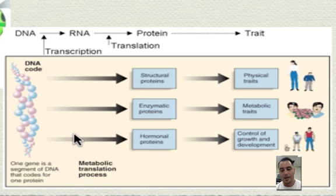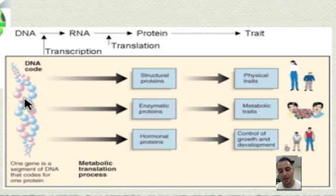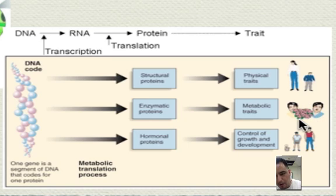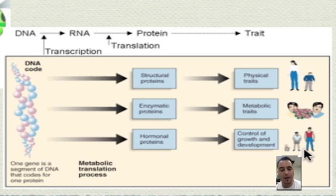Nucleic acids are the molecules that store genetic information, like DNA and RNA. Inside there's a code, and the code is to build proteins. These sections of DNA are called genes, and they're there to build different kinds of proteins to reveal our traits — our metabolic traits in terms of how fast we use energy — and to control our growth and development. That's all from the nucleic acids: the molecules that contain our genetic information.